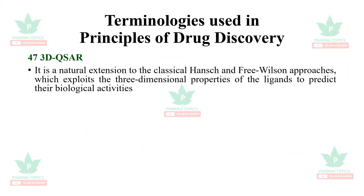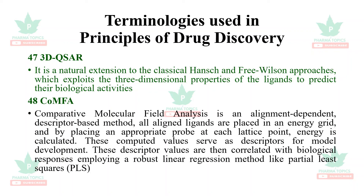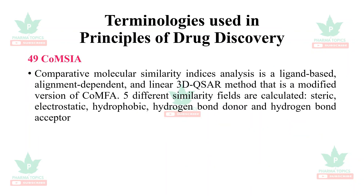3D QSAR is a natural extension to the classical Hansch and Free Wilson approaches, exploiting the three-dimensional properties of ligands to predict their biological activities. CoMFA (Comparative Molecular Field Analysis) is an alignment-dependent descriptor-based method — aligned ligands are placed in an energy grid and a probe is kept at each point; computed values serve as descriptors correlated with biological responses using PLS. CoMSIA (Comparative Molecular Similarity Indices Analysis) is a ligand-based, alignment-dependent, linear 3D QSAR method — a modified version of CoMFA — where five similarity fields are calculated: steric, electrostatic, hydrophobic, hydrogen bond donor, and hydrogen bond acceptor.